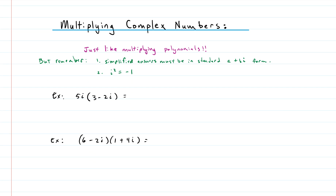Now let's talk about multiplying complex numbers. The good thing is this is a lot like multiplying polynomials, but there are a couple of things to remember: your answer needs to end up in a plus bi form, and if you ever have any i squared terms, you need to replace those with negative one. Any power of i greater than one needs to be rewritten using an equivalent form.